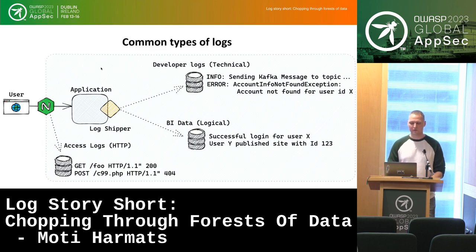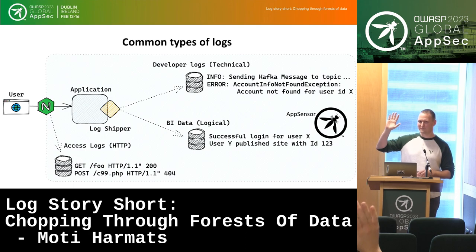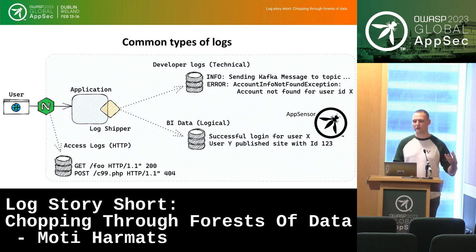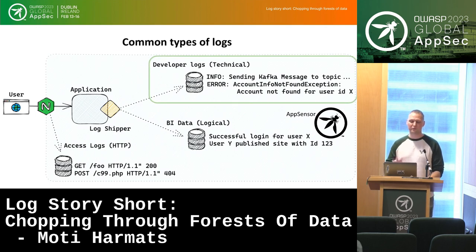There's a great project called OWASP AppSensor. Raise your hand if you're familiar with it. It's a great project — it provides both a technical and logical framework of what you need to do with your own logs, showing the steps to understand if someone is attacking you and what you need to do to protect yourself. It talks about all types of logs including access logs, BI, and developer logs. But I'm going to focus specifically on developer logs, and specifically inside them about the errors — this is the 1% that interests me.